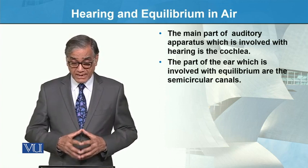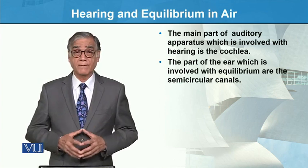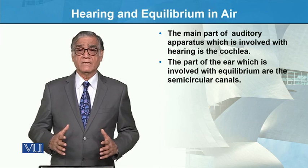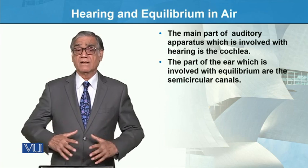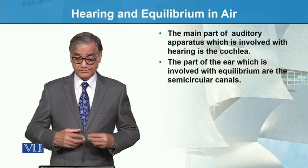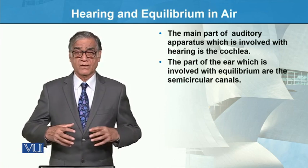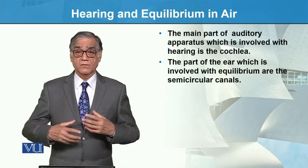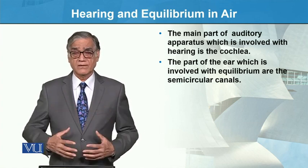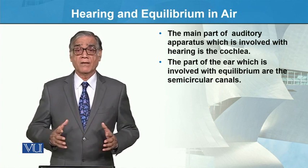The part of the ear involved with equilibrium or balancing is also under the control of the ear. This part is responsible for equilibrium, and when it is bent or tilted, it means the animal will nod or lose balance.